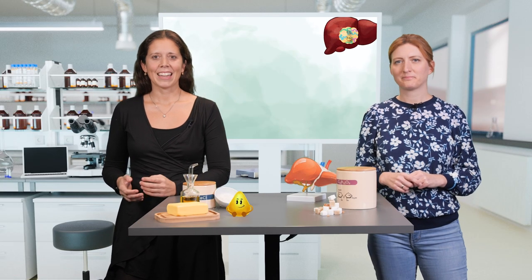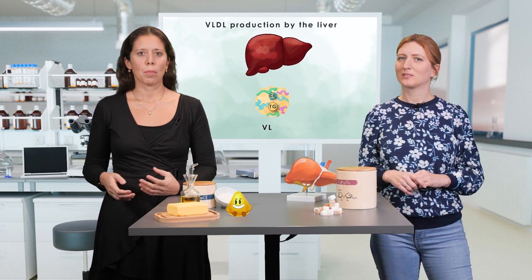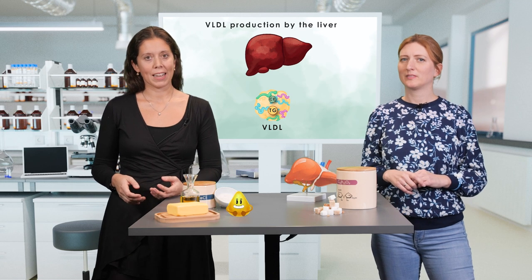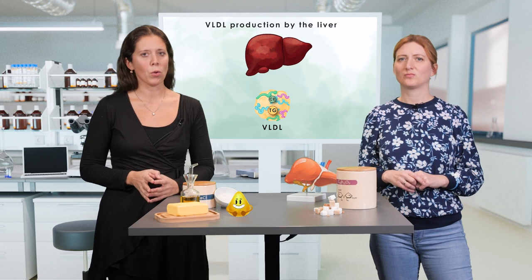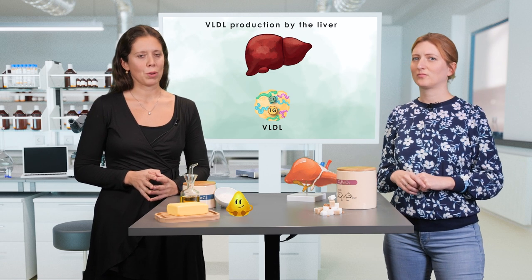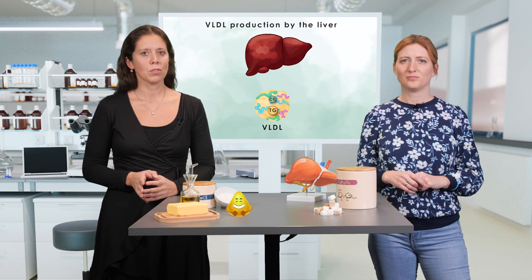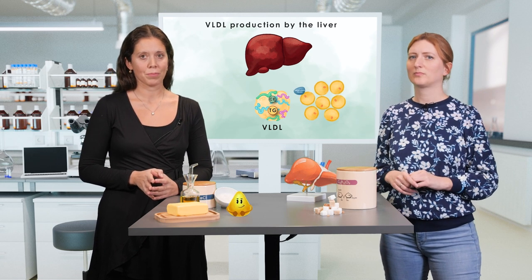In the liver, the next class of lipoproteins is produced: the very low-density lipoproteins, or VLDL. As their name suggests, they still have a low density and are therefore rich in triglycerides. Those are also a substrate for lipoprotein lipase. Thereby, the content of triglycerides decreases and more cholesterol esters remain.